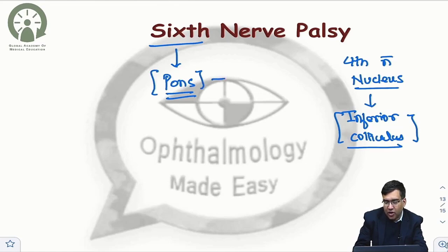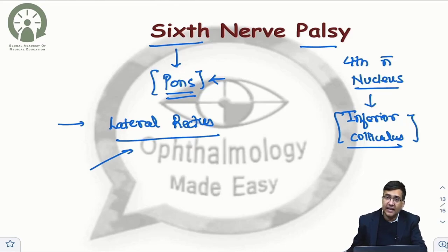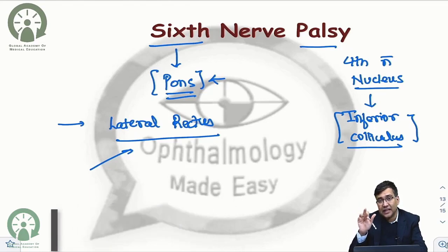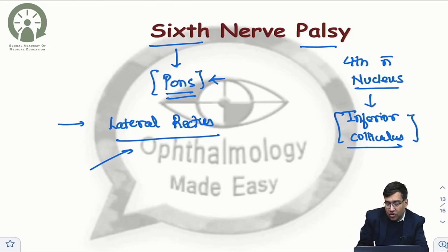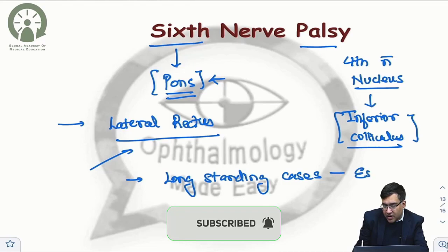The sixth nerve supplies the lateral rectus. So whenever there is a sixth nerve palsy, the damage would be in the lateral rectus. The patient would come with a paralytic squint. The lateral rectus is not acting; what is acting is the third nerve and the superior oblique. The third nerve can cause a medial movement of the eye, leading to esotropia in long-standing cases.